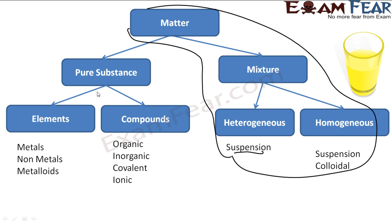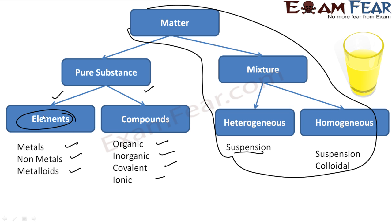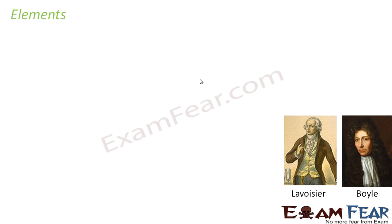Pure substance is further classified into elements and compounds. Elements are further classified into metals, non-metals, and metalloids. Compounds can be organic, inorganic, or covalent-bonded. Now let's first study elements and compounds — let's begin with elements.